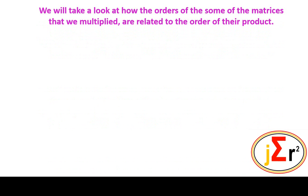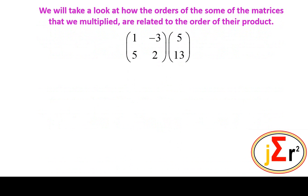We will take a look at how the orders of some of the matrices that we multiplied are related to the order of their product. There is a relationship between the order of the matrices being multiplied and the order of the result. In fact, the order of the matrices might also dictate that the product is not possible.